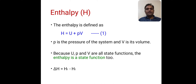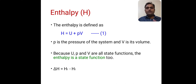As enthalpy is a state function, the difference in enthalpy, that is delta H, we can write it as HF minus HI, where HI is the enthalpy of the initial state, while HF is the enthalpy of the final state. So delta H is equal to HF minus HI.